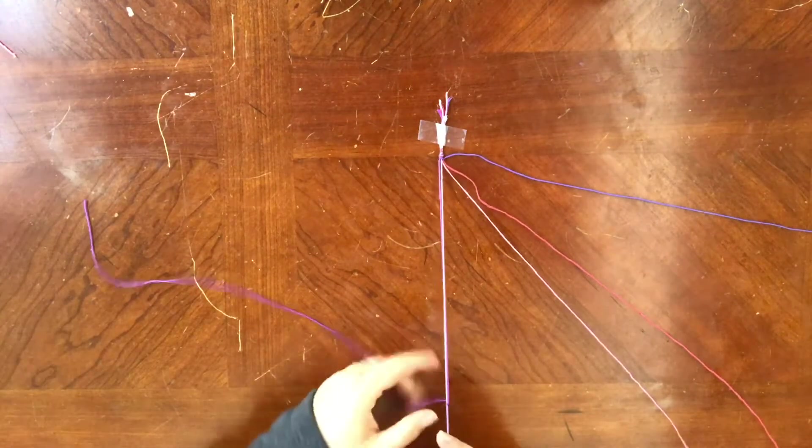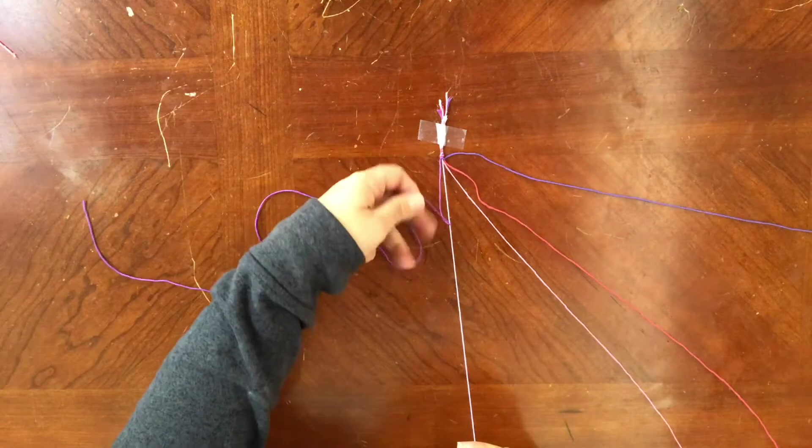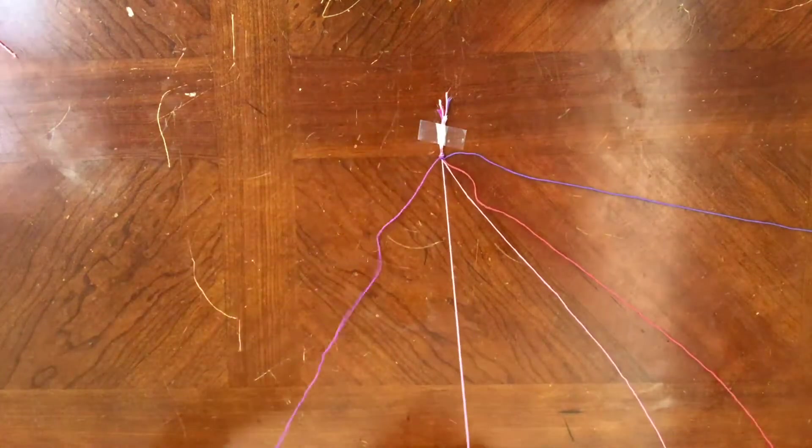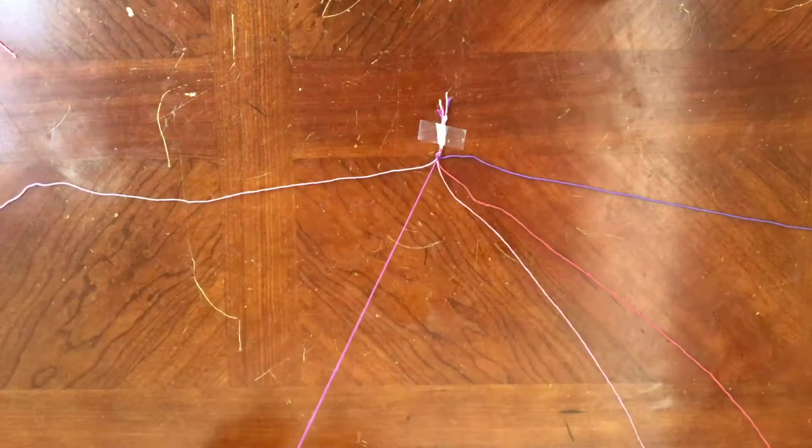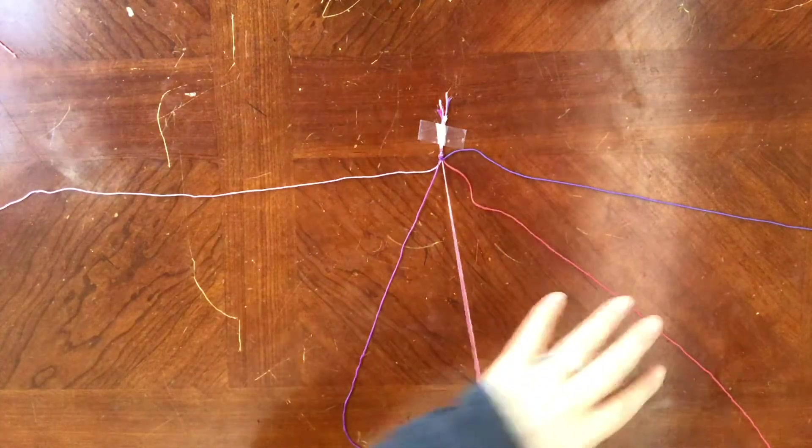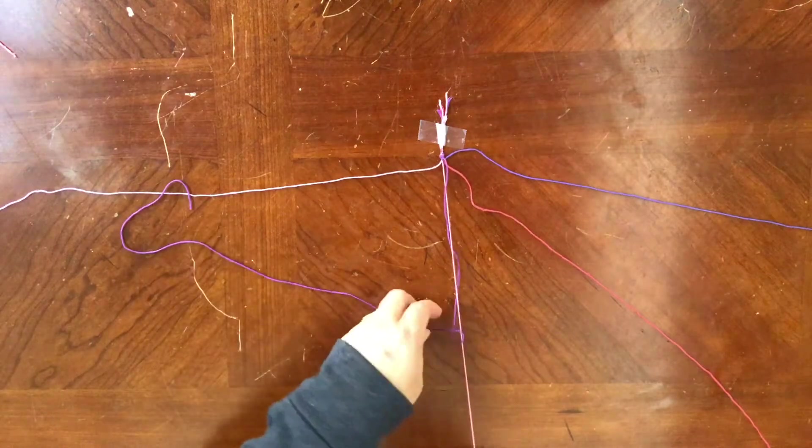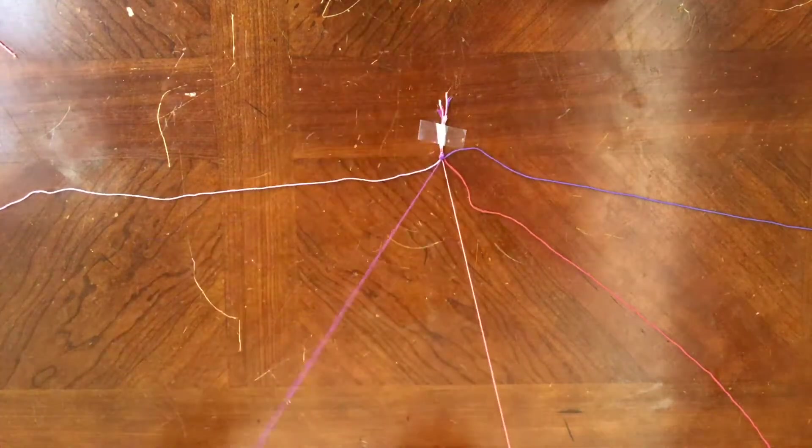Repeat the same process. Make the number four, pull through, tighten the knot. Do it twice for each string: make the number four, pull through, tighten the knot. Then put that string away, start with the next string, make the number four, pull through, tighten the knot, over and over.